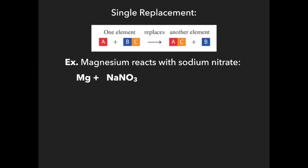Magnesium is going to kick out sodium because positively charged metals kick out other positively charged ions. Magnesium kicks out sodium to form a new compound with nitrate. Magnesium has a two-plus charge and nitrate has a minus one charge, so magnesium nitrate is Mg(NO₃)₂, and sodium is left by itself. To balance: there are two nitrates on the product side, so put a two in front of sodium nitrate, which means two sodiums — put a two in front of sodium. In single replacement, one element kicks out another that was part of a compound.